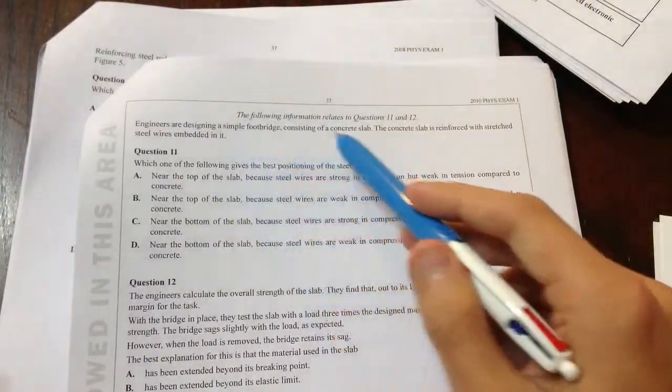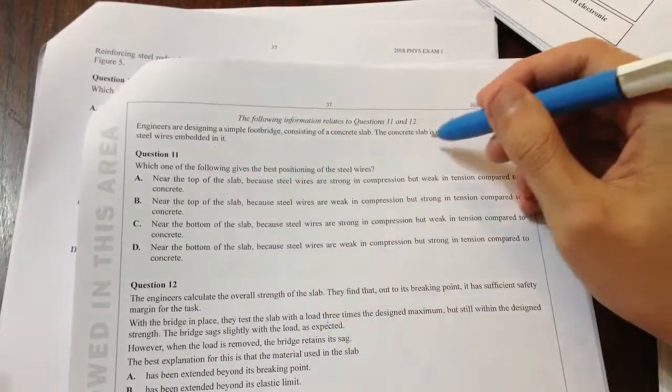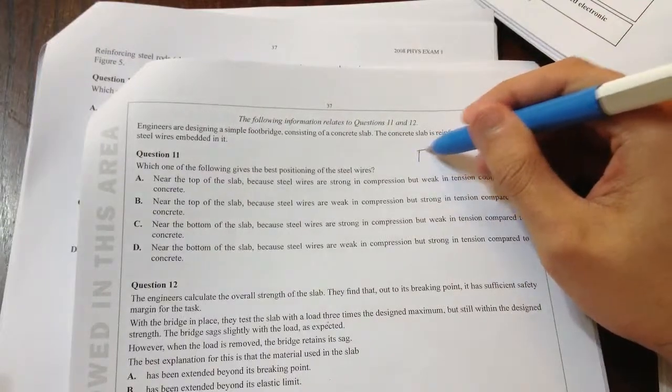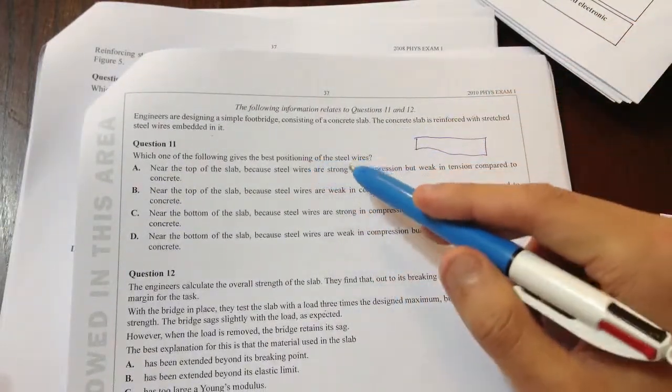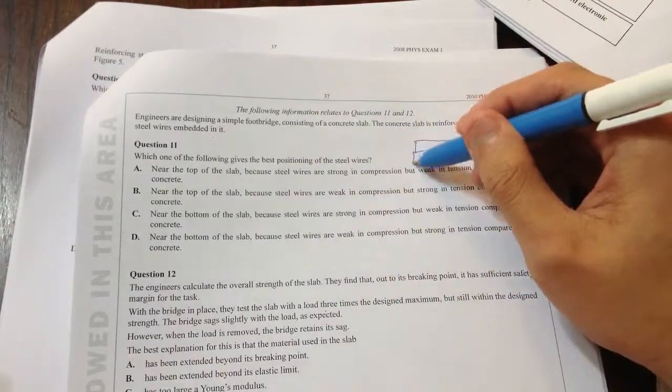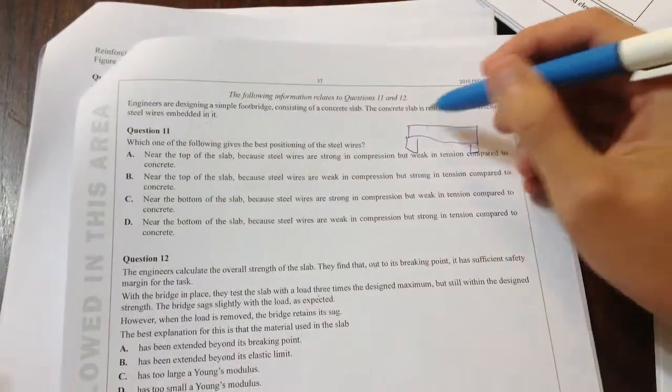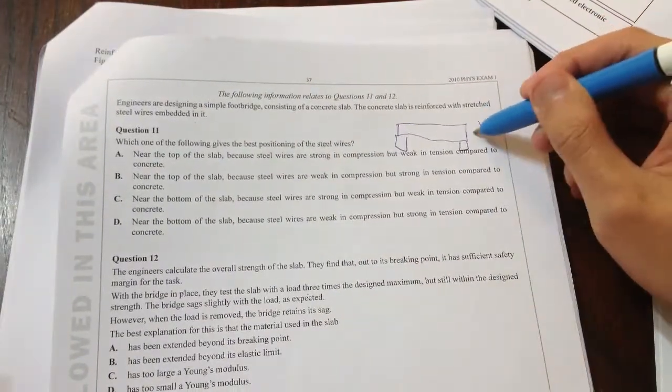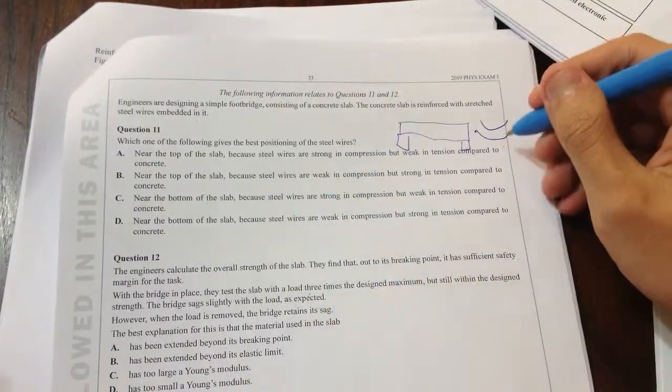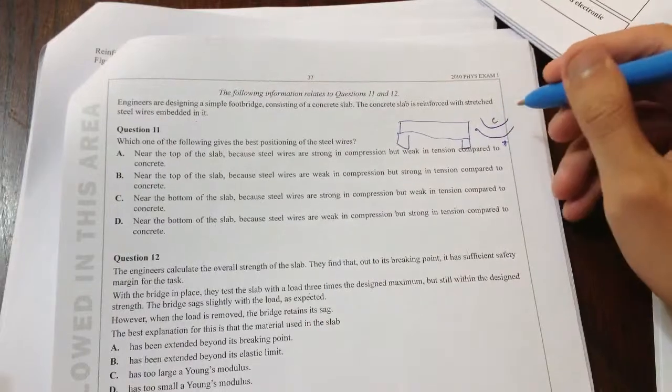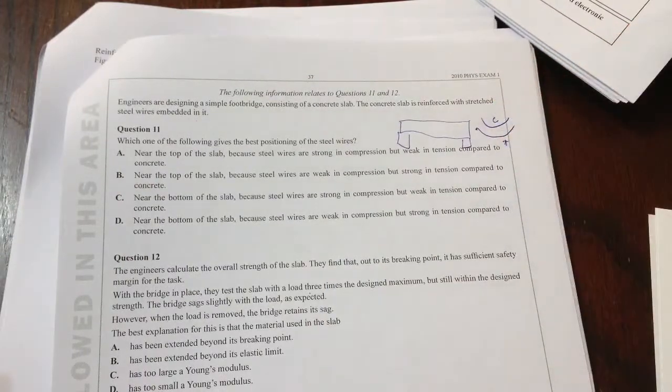Engineers are developing a simple footbridge using a concrete slab. The concrete slab is reinforced with stretched steel wires. Which gives the best position of the steel wires? It's a footbridge. So that means it's being held like this. If it was going to break, it would break like that. Where do we want? So that means this side is under tension. That's under compression. So now what's our question?